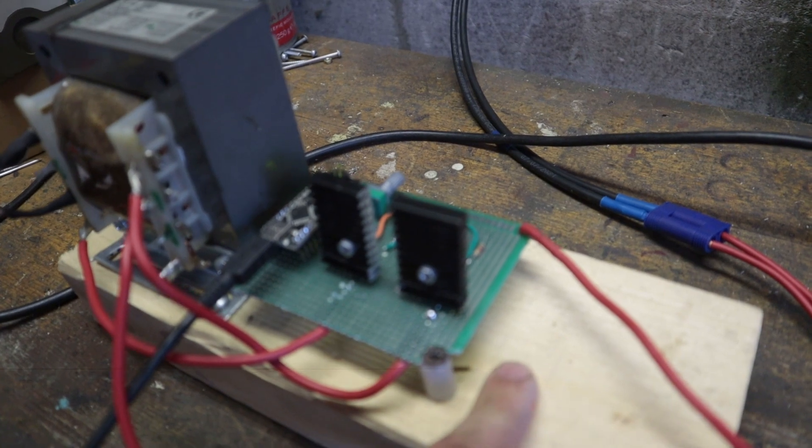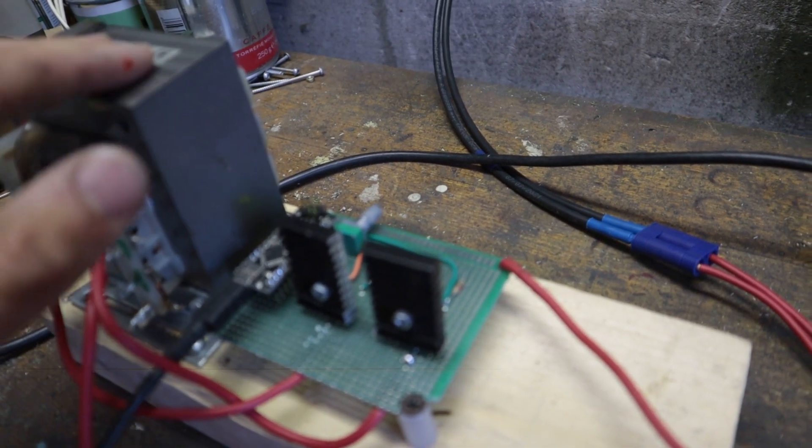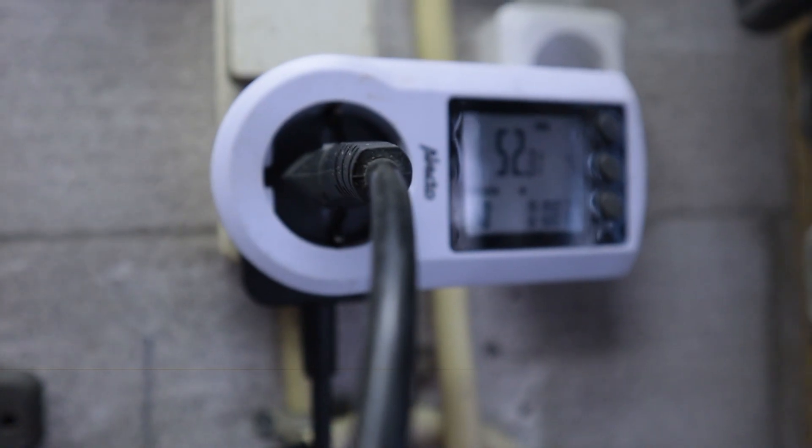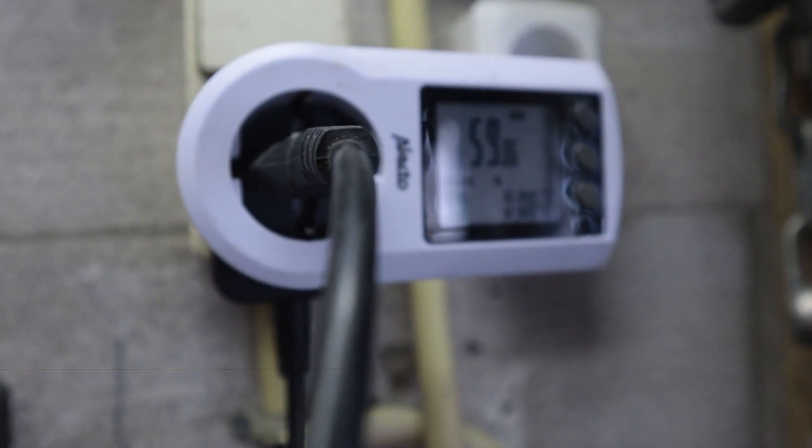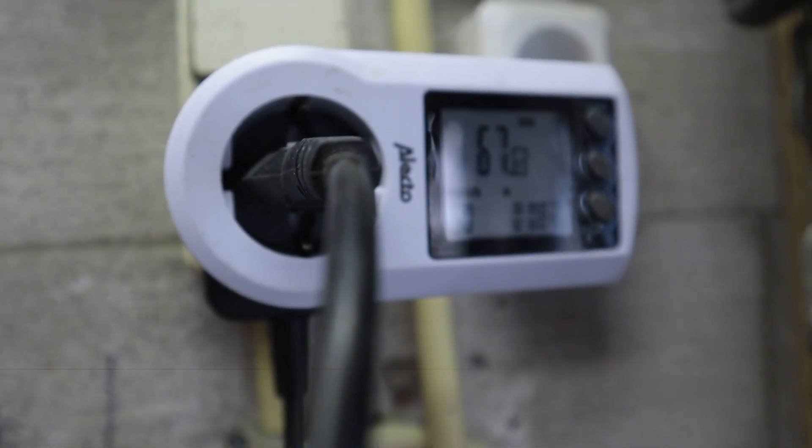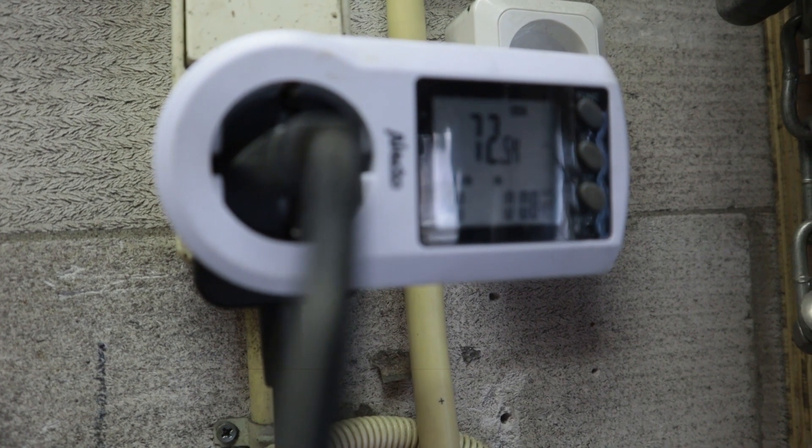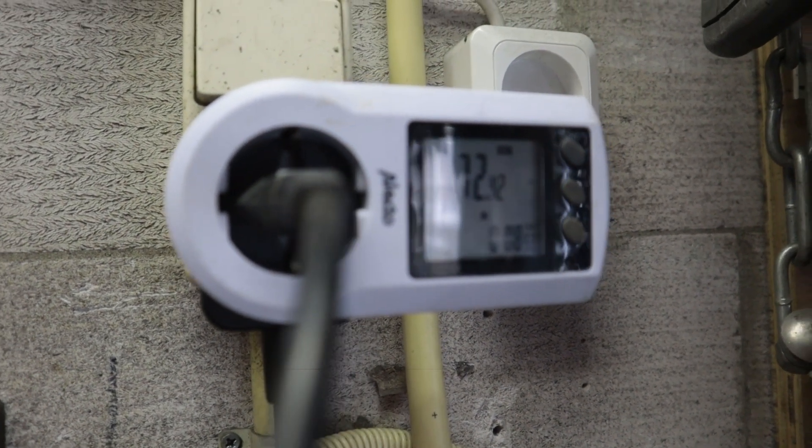So possibly if you put like a cooling fan over here, you can produce a lot more power, because this transformer could do up to about 200 watts I think. So then you can feed about 200 watts of power into the grid, which is not too bad for a DIY grid tied inverter. There you go, up to 60, 70, 70 watts of power into the grid.